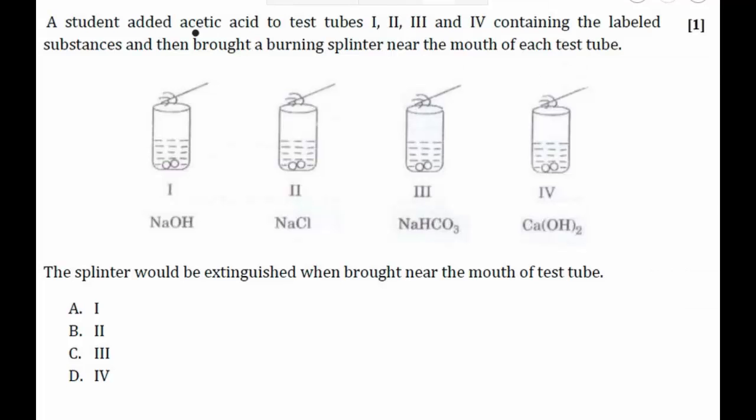In this question we have four test tubes. The first one contains NaOH, second contains NaCl, third contains NaHCO3, and the fourth one contains Ca(OH)2. A student adds acetic acid to these four test tubes.